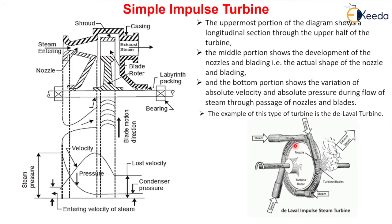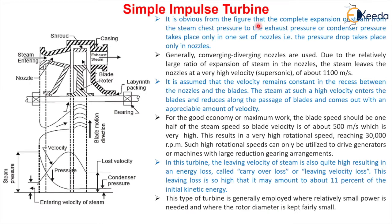It is obvious from the figure that the complete expansion of steam — from the steam chest pressure (boiler pressure) to the exhaust or condenser pressure — takes place only in one set of nozzles. Pressure drop takes place only in the nozzle. Generally converging-diverging nozzles are used due to the relatively large ratio of expansion. The steam leaves the nozzle at a very high velocity — about 1100 meters per second, which is supersonic.